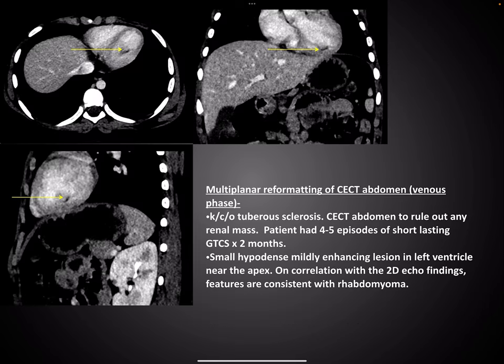Another patient, a known case of tuberous sclerosis, came for diagnosis of renal angiomyolipomas. An abdominal CT was performed, but on the thorax section we were able to pick up a hypodense area void of contrast filling. The patient was suspected for cardiac rhabdomyoma, and 2D echo findings were consistent with cardiac rhabdomyoma.